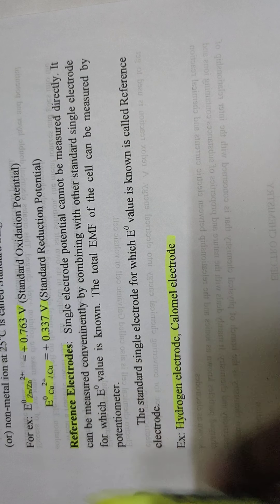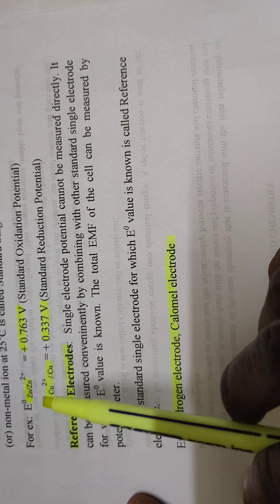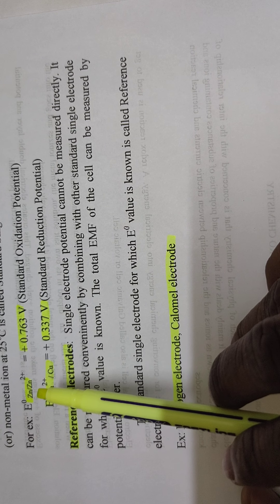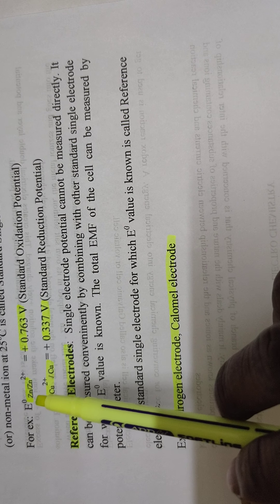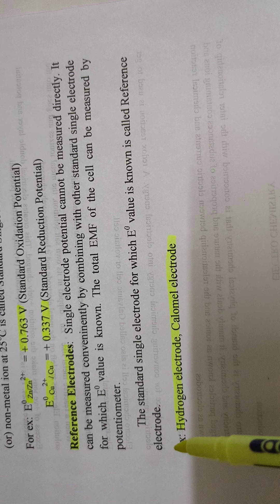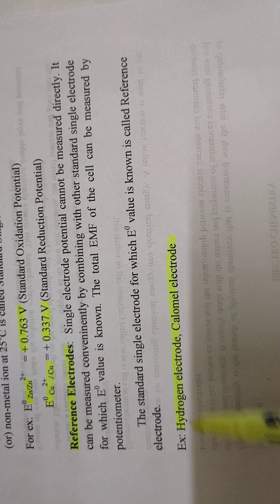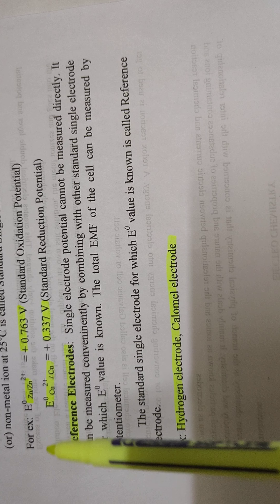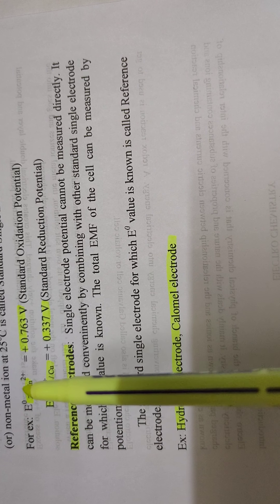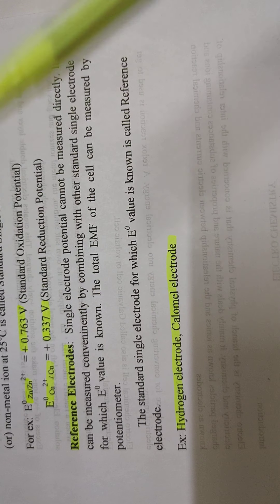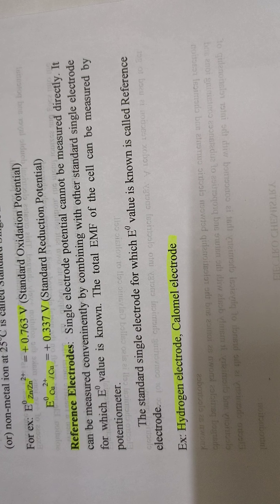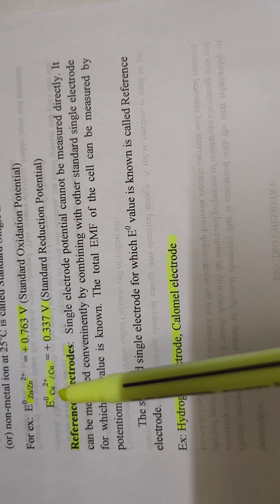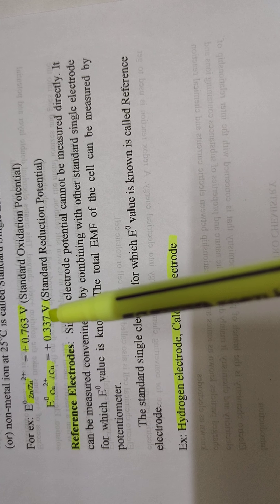For finding the standard single electrode potential, the metal whose single electrode potential is to be calculated should be connected to a reference electrode. Single electrode potential cannot be measured directly, so it can be measured conveniently by combining with another standard single electrode for which the E° value is known. For example, E° (Zn/Zn²⁺) is calculated by combining with a reference electrode.